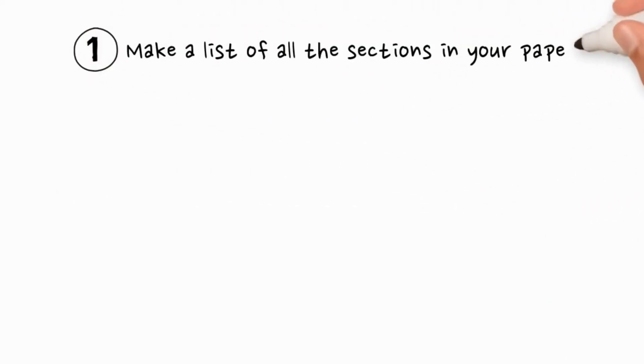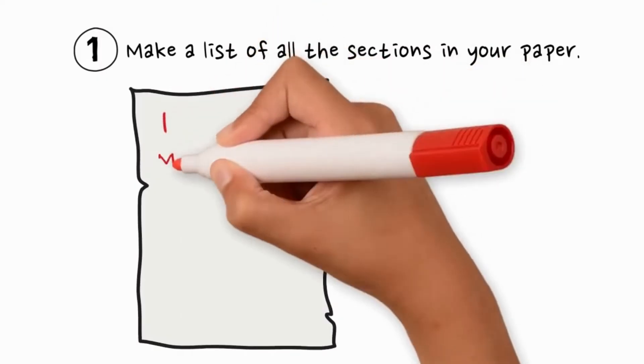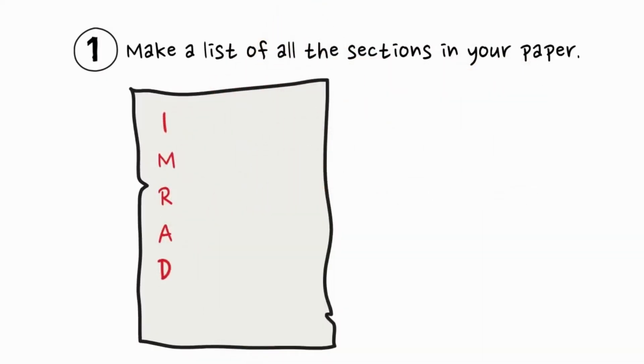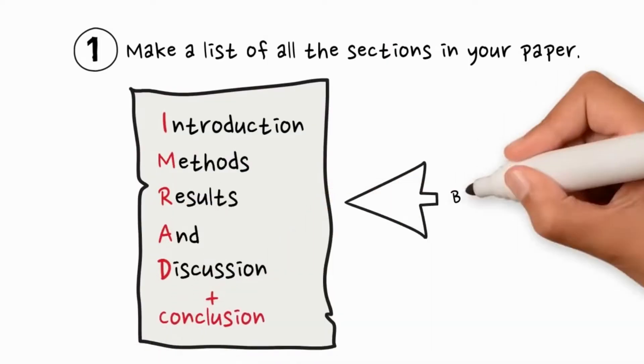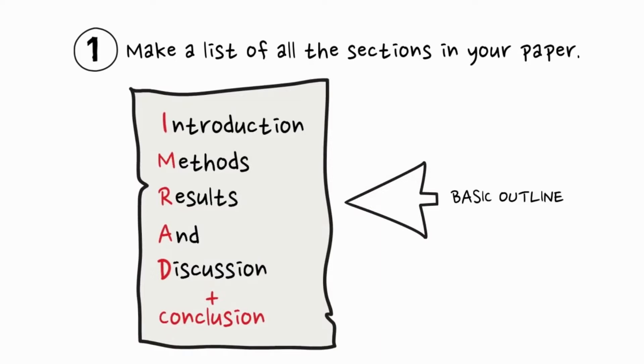First, make a list of all the sections in your paper. Your research paper should follow the IMRAD format and must include an introduction, methods, results and discussion, and conclusion. This is the basic outline for your research paper.